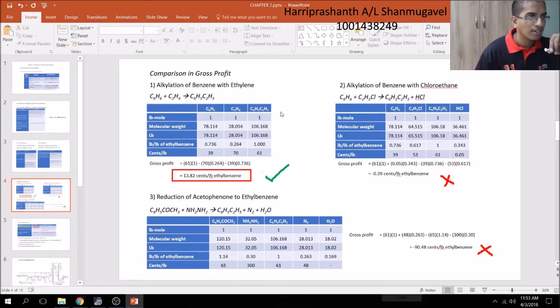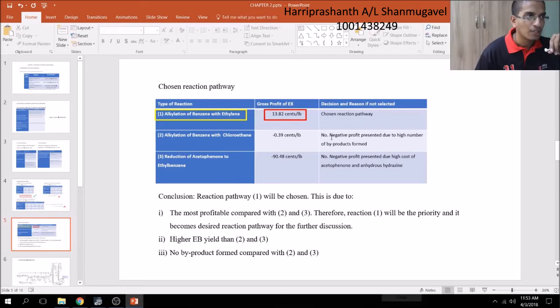For the third pathway, the selectivity of the catalyst towards ethyl benzene is above 90%. However, there are many disadvantages: low ethyl benzene yield of 45% and the cost of anhydrous aluminum chloride is expensive. We compared the three reaction pathways in terms of gross profit. Reaction pathway 1 is the only pathway that gives positive gross profit, while pathways 2 and 3 show significant loss.